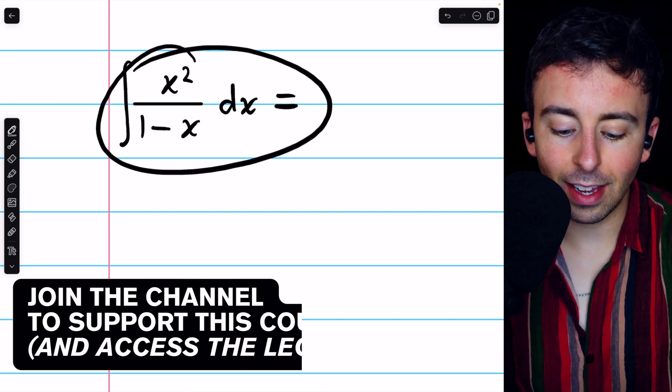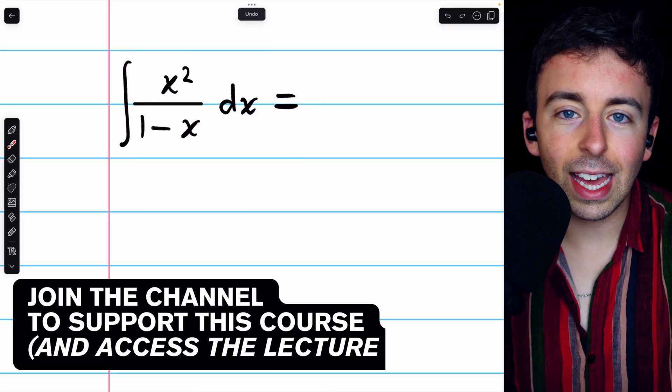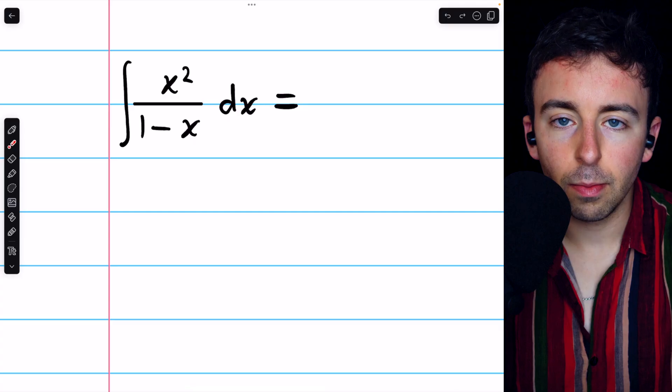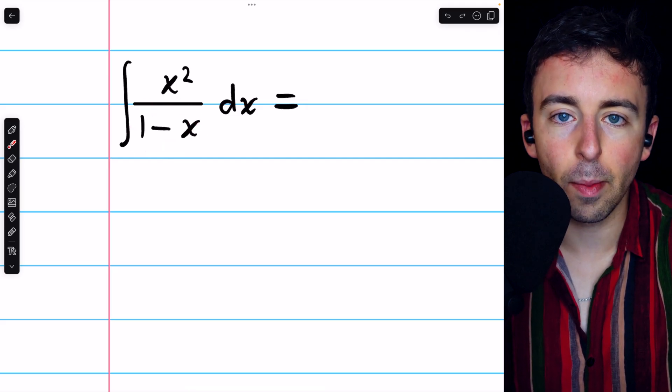To integrate x squared over 1 minus x, it doesn't look like a u substitution is going to work. We can't let u equal x squared because the derivative of that is 2x, which is not going to help us capture what's in the denominator.